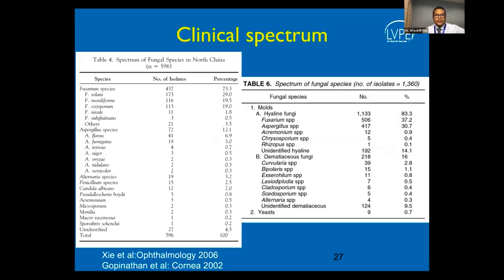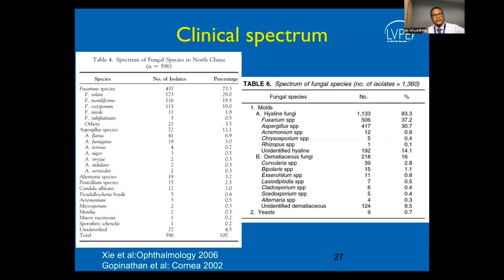Clinical studies on the type of fungal keratitis found that hyaline filamentous fungus is very common, predominantly Fusarium and Aspergillus. This was seen in large studies from both South India and North China.